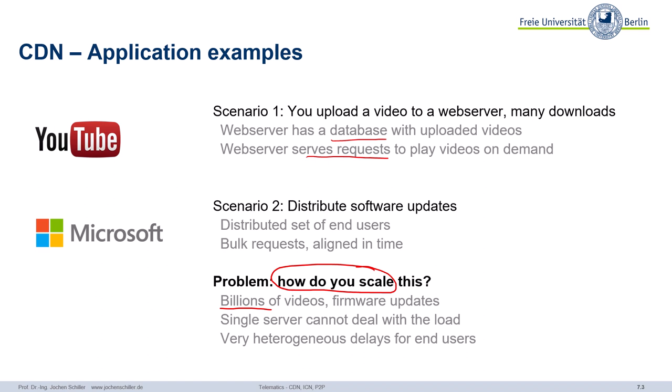I explained in the context of HTTP and web already the different layers, how you can do load balancing, etc. But still, does this scale? Especially, you have very different delays for end users — maybe some are closer to the server, some are further away. Even with a server farm, this doesn't help. Second scenario: distribute software. So you have millions of end users, and now you want to update.